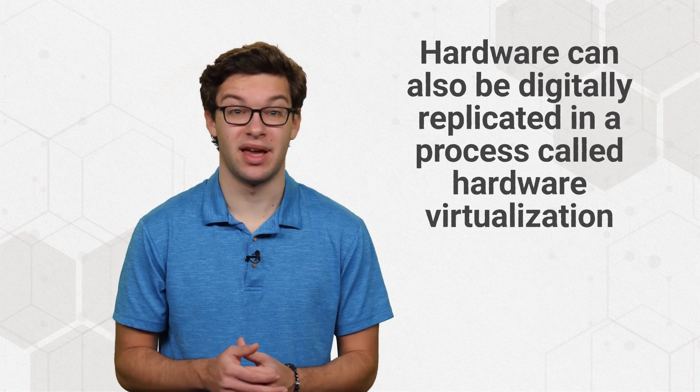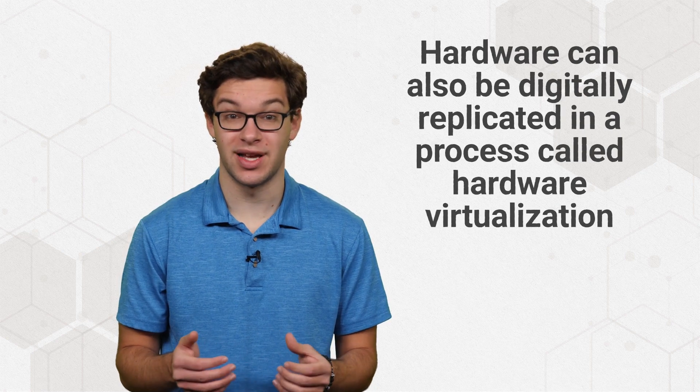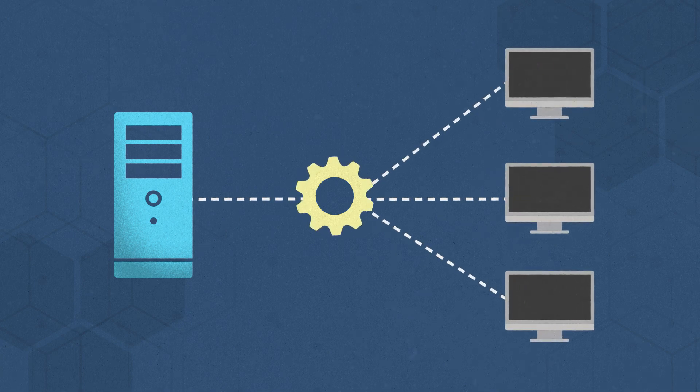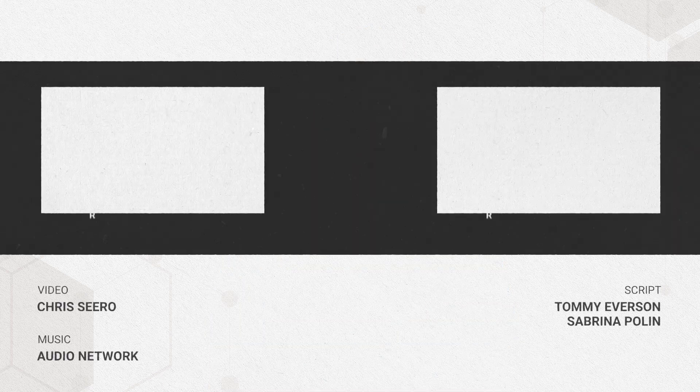Hardware can also be digitally replicated in a process called hardware virtualization. This process is carried out by software called hypervisors, which enable hardware resources, like a keyboard or memory card, to be shared among operating systems and applications. This essentially means that one physical computer can run several virtual computers, improving hardware utilization and efficiency.